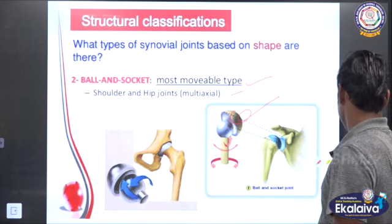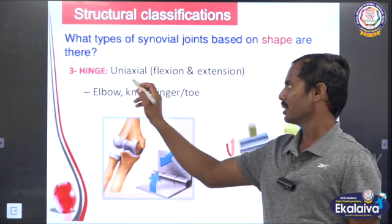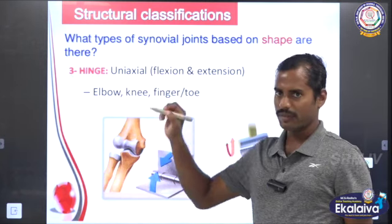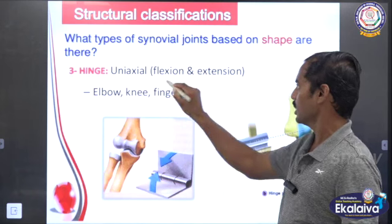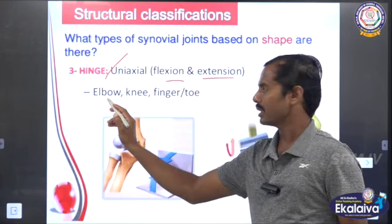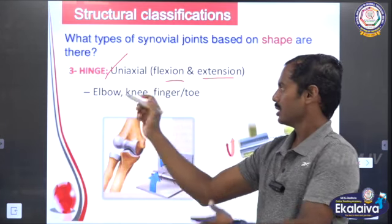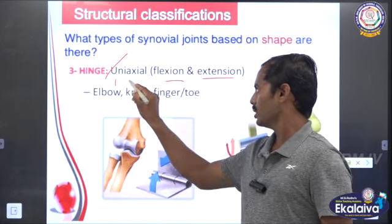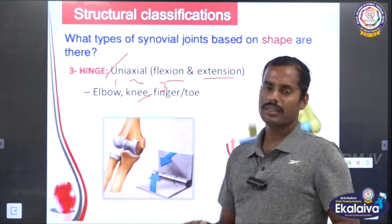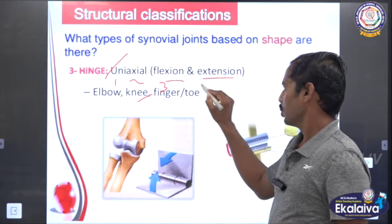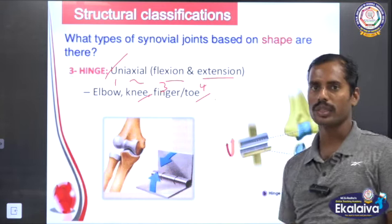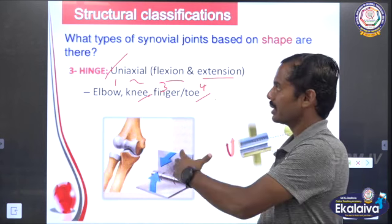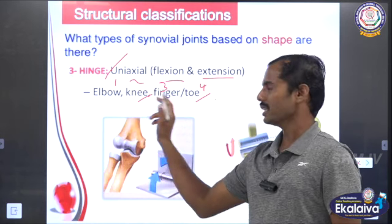Number three: hinge joint. The hinge joint is uniaxial — it allows only flexion and extension. Examples include the heel, knee, and finger joints. This is a hinge joint. This is the elbow, knee, finger, and toe joint.